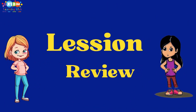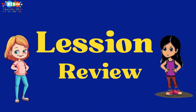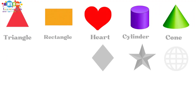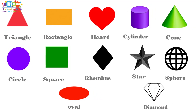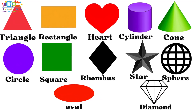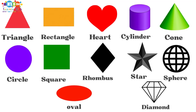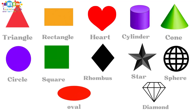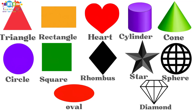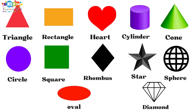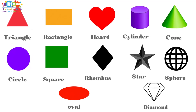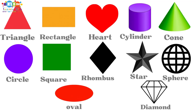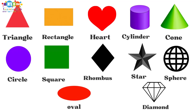Lesson review. Read one by one. Triangle. Rectangle. Heart. Cylinder. Cone. Circle. Square. Rhombus. Star. Sphere. Oval. And diamond. Triangle.